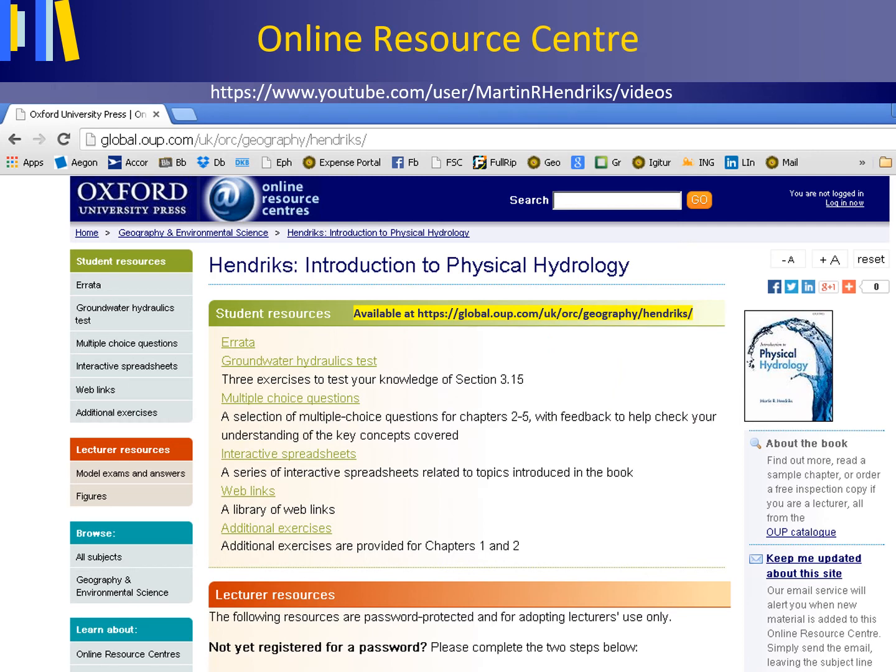This slide shows the online resource center or companion website of my textbook. As an interactive spreadsheet, it contains a worked out example of the Penman-Monteith evaporation, comparing the evaporation from a forest, grassland, and open water.